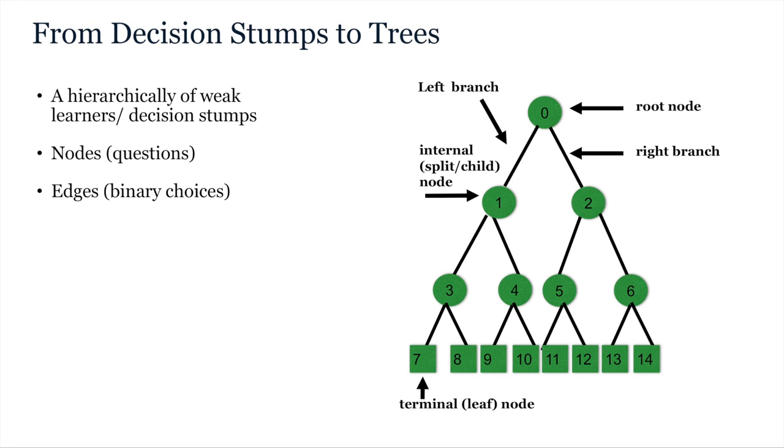In this final video for week 6, let us discuss decision trees. Essentially, a decision tree is a hierarchy of decision stumps, for example here, here, here and here.